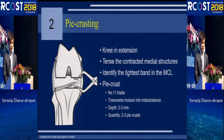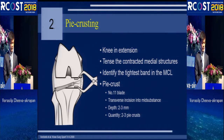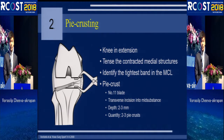The next technique is pie-crusting. This is performed with the knee in extension. We identify the contracted medial structure and identify the tightest band in the MCL. Then we perform pie-crusting using a blade number 11, making transverse incisions with a depth of two to three millimeters, performing just two to three pie-crust cuts, and then we evaluate the medial-lateral gap.